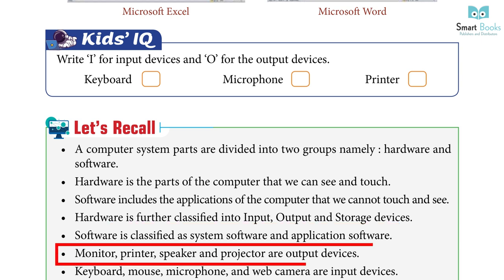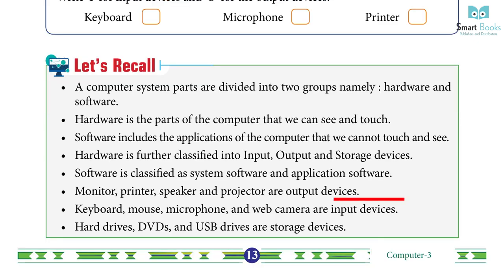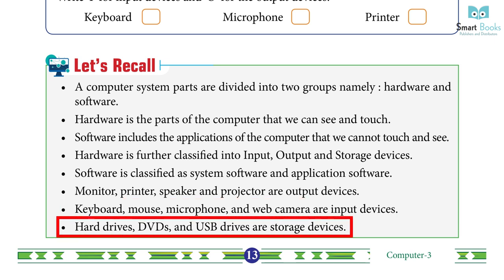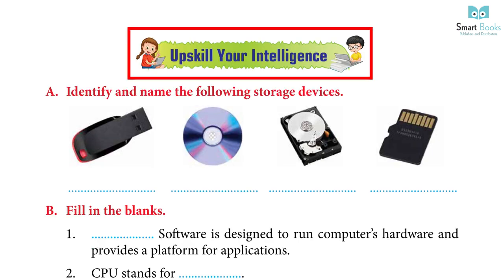Monitor, printer, speaker and projector are output devices. Keyboard, mouse, microphone and web camera are input devices. Hard drives, DVDs and USB drives are storage devices.